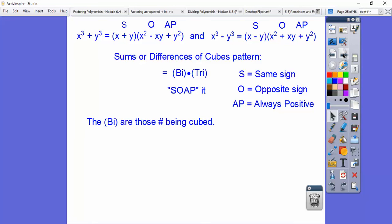So the bi's are the guys that are being cubes. So x³ + y³ is x + y. x³ - y³ is x - y. And then I call them my bookends. For the trinomial part, you square what's in the binomial. So square that goes here. Square that goes here. So if I square these, they're the end pieces of my trinomial right there.